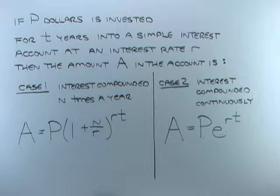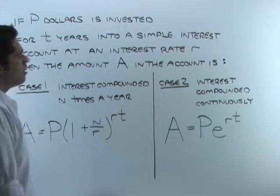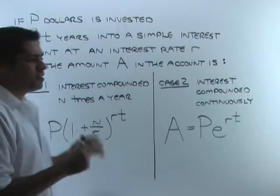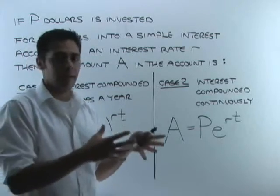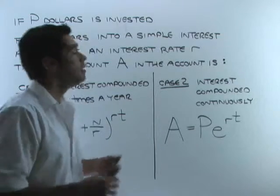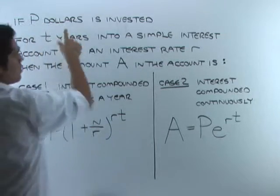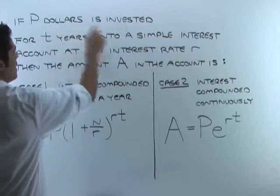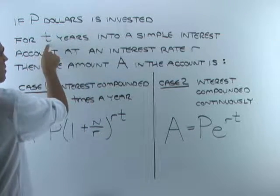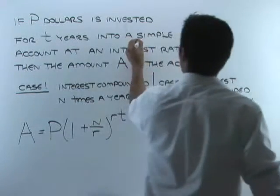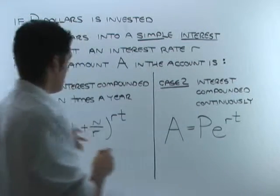Let's take a look at what's called simple interest formulas. The idea is that you're going to put some money into a bank, it's going to accumulate interest, and we want to know how much money is going to be there at the end. If P dollars — that's your principal balance, the amount you put in — is invested for T years into a simple interest account, these formulas only work when you're using simple interest.